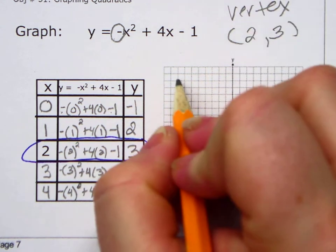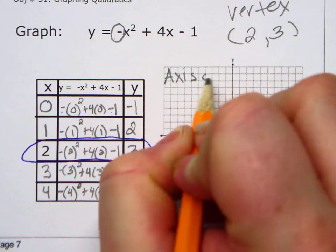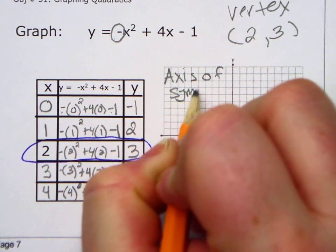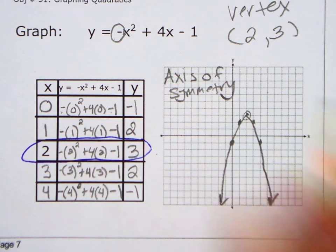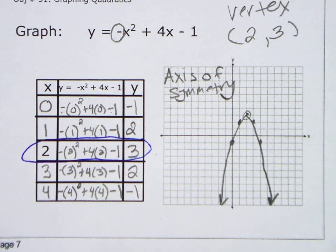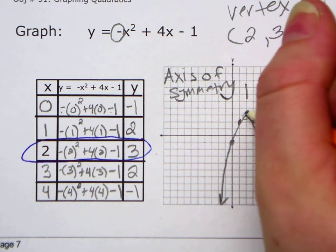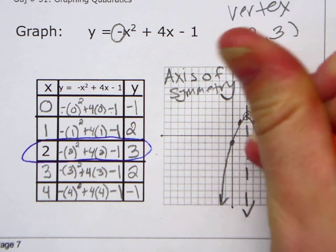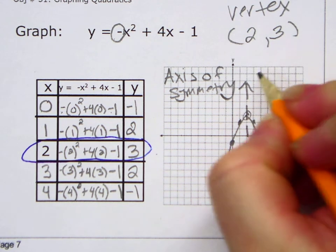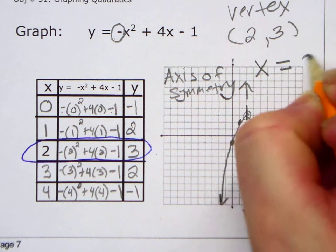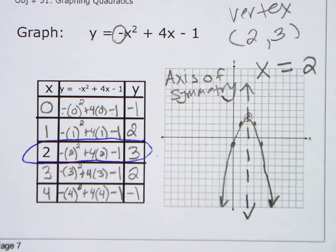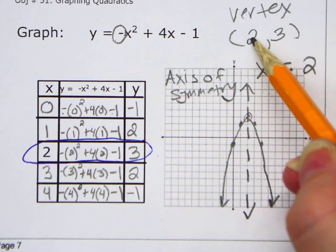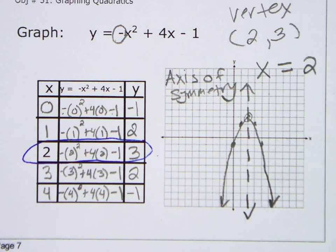And then what's my axis of symmetry? What is that vertical line? It's right here, this dotted line. I'm going to draw it right through the center. What's the equation of a vertical line? x equals 2. x equals 2. It's always x equals this number. And that's it.